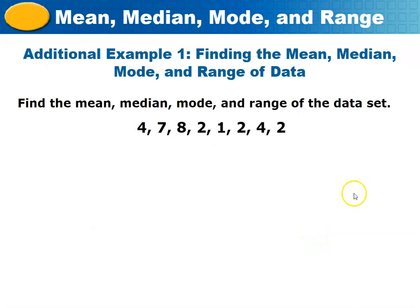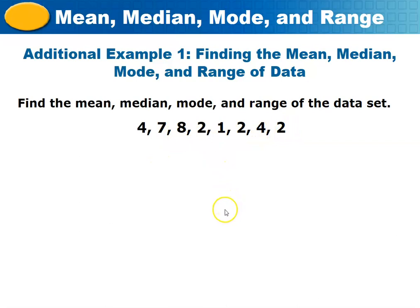Let's solve some problems finding the mean, median, mode, and range. The data set given is: 4, 7, 8, 2, 1, 2, 4, and 2. First, arrange the values in ascending order — from smallest to greatest — giving us: 1, 2, 2, 2, 4, 4, 7, 8. This makes it easier to determine the mode.